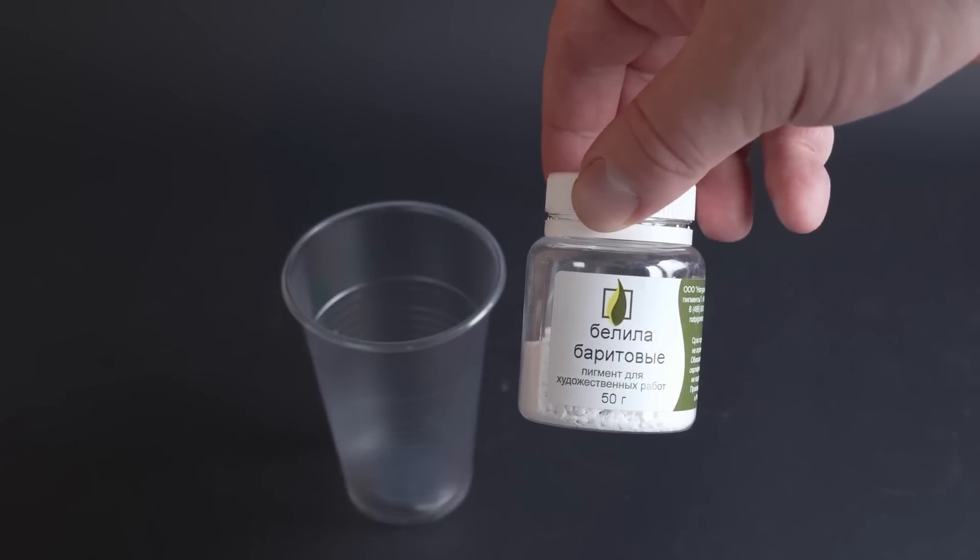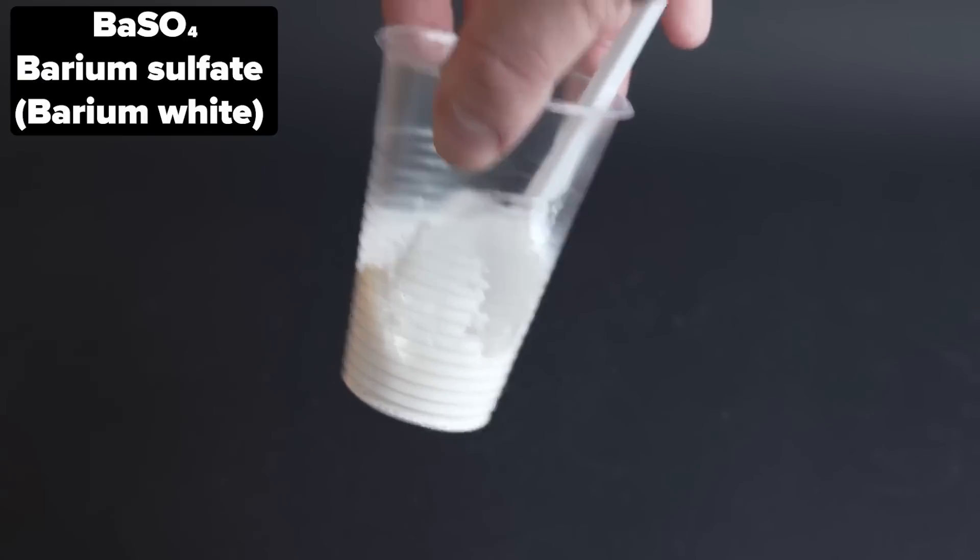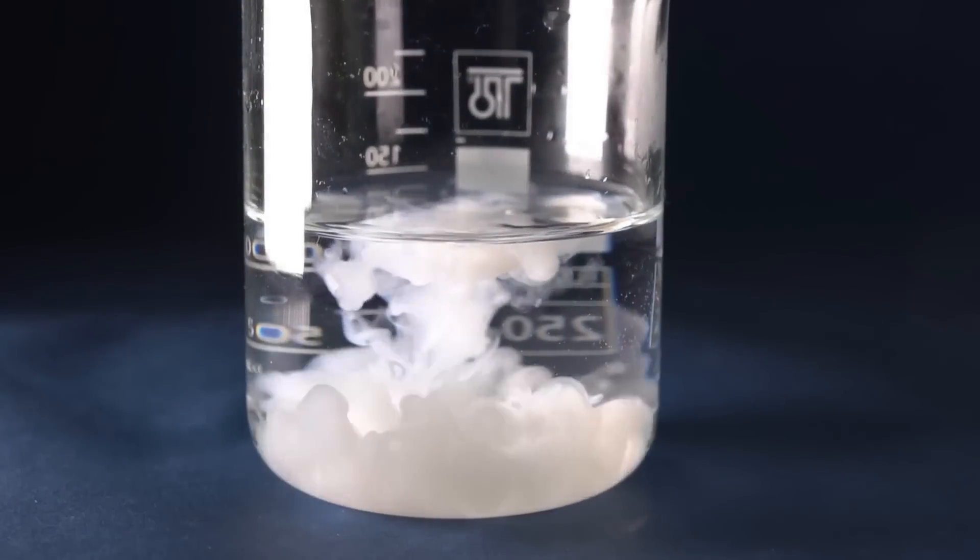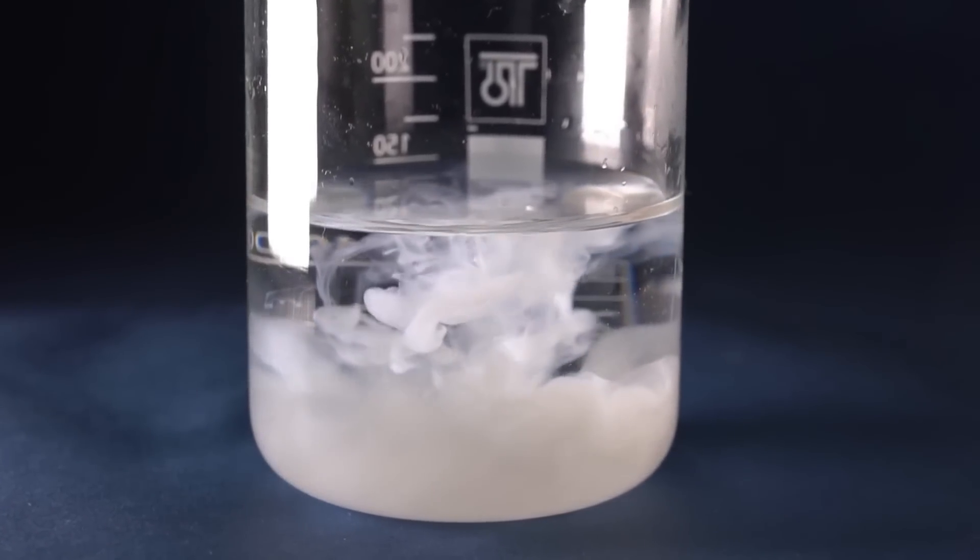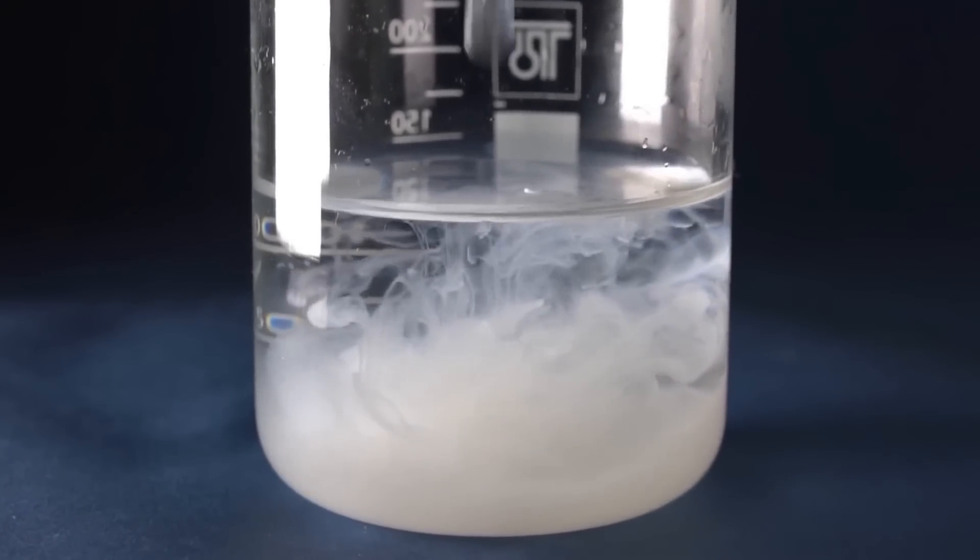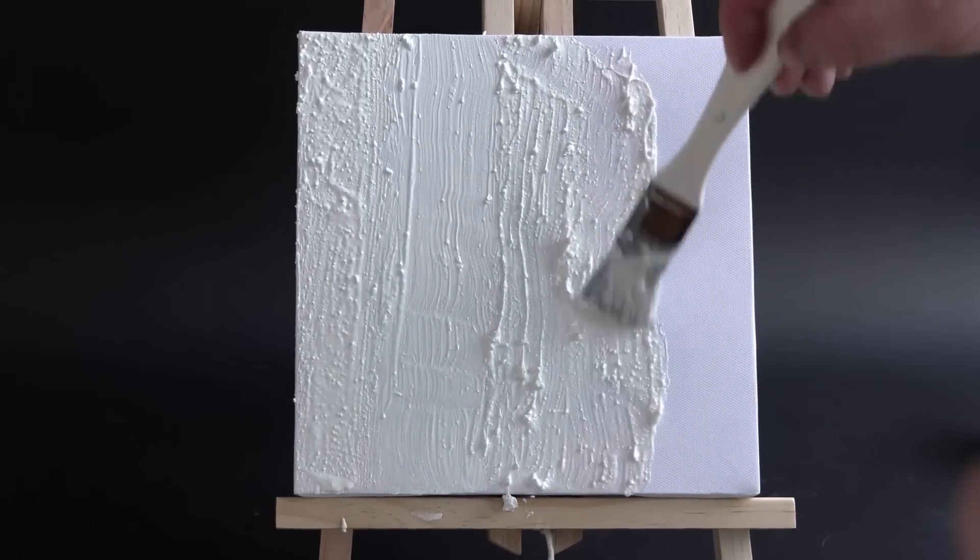After that, I took another type of white pigment, barium whites, which are barium sulfate. It's also used as a contrast agent for scanning the intestines. Barium compounds are quite toxic in themselves, but due to the incredibly low solubility of barium sulfate in water, this substance is generally considered safe. The opacity of barium whites is low, so they are rarely used.